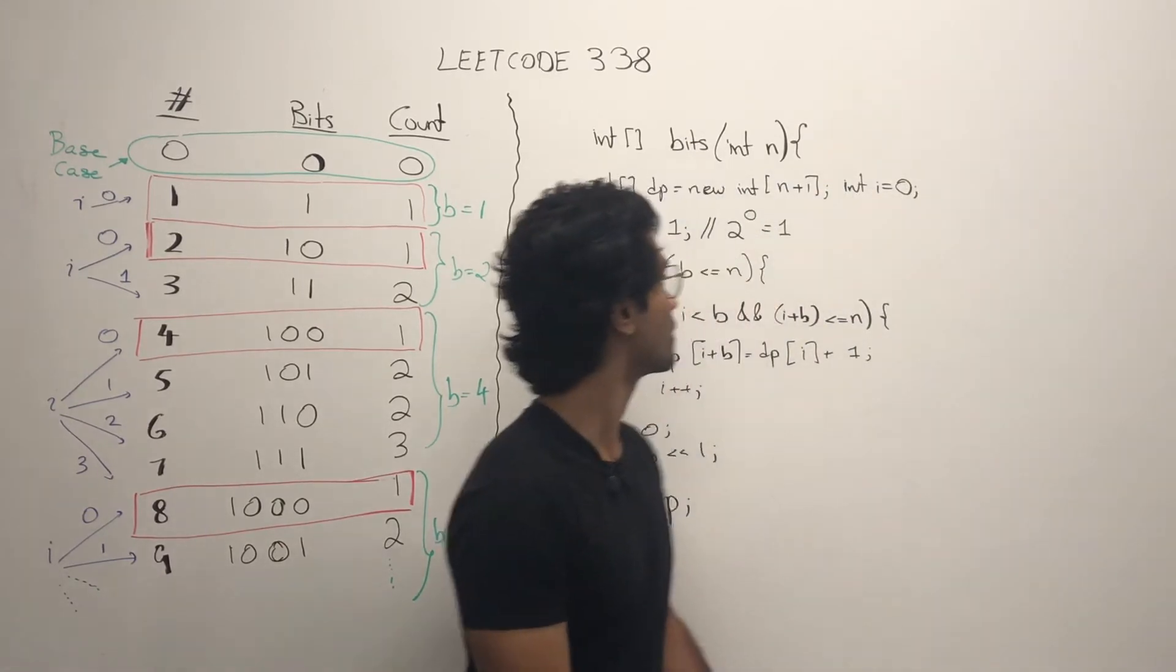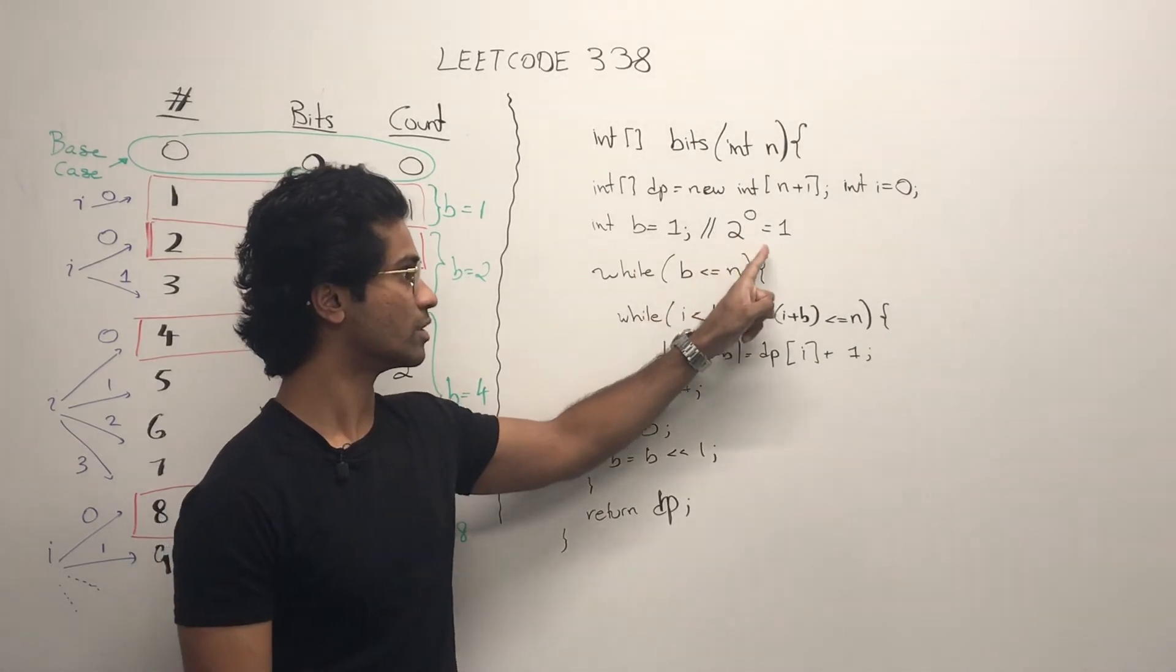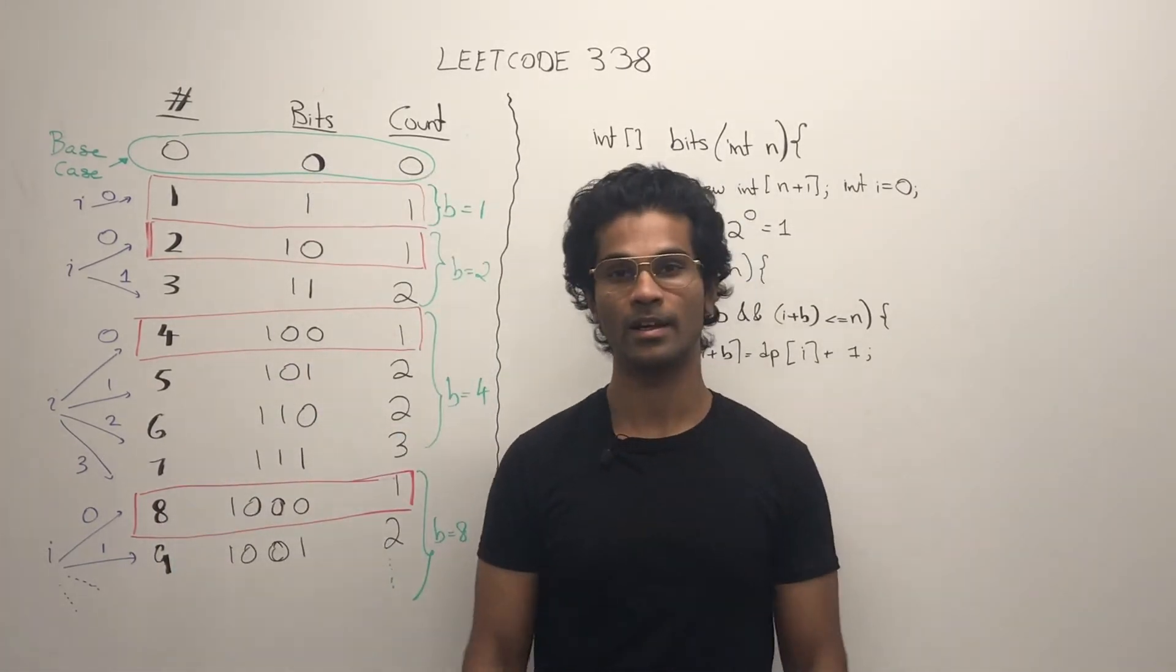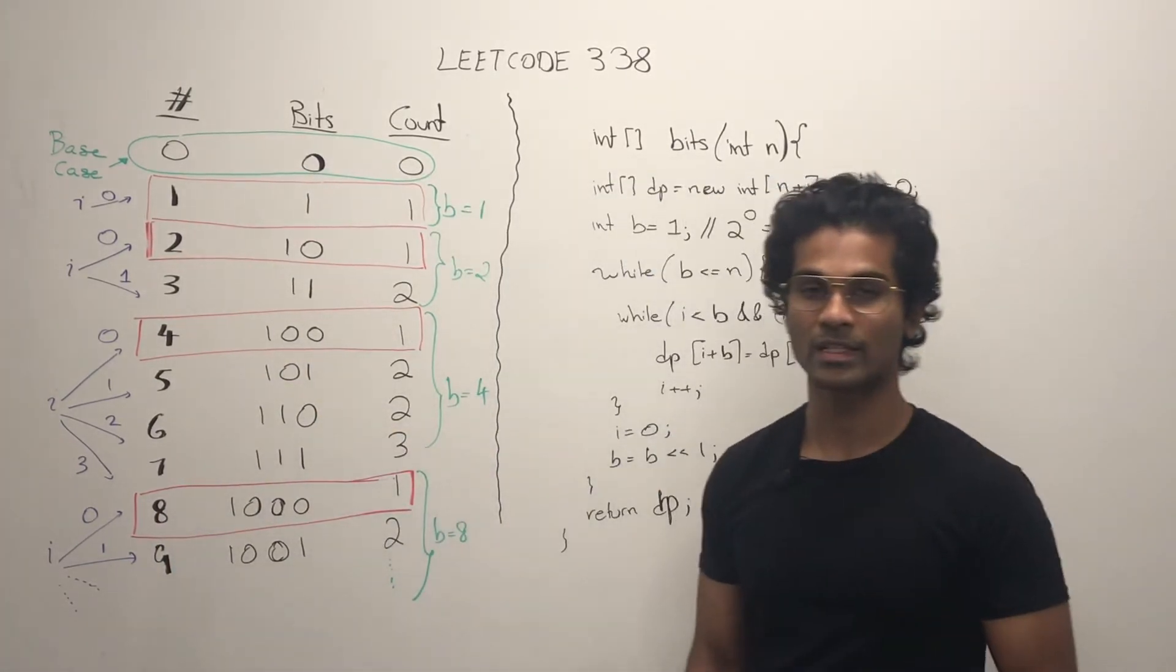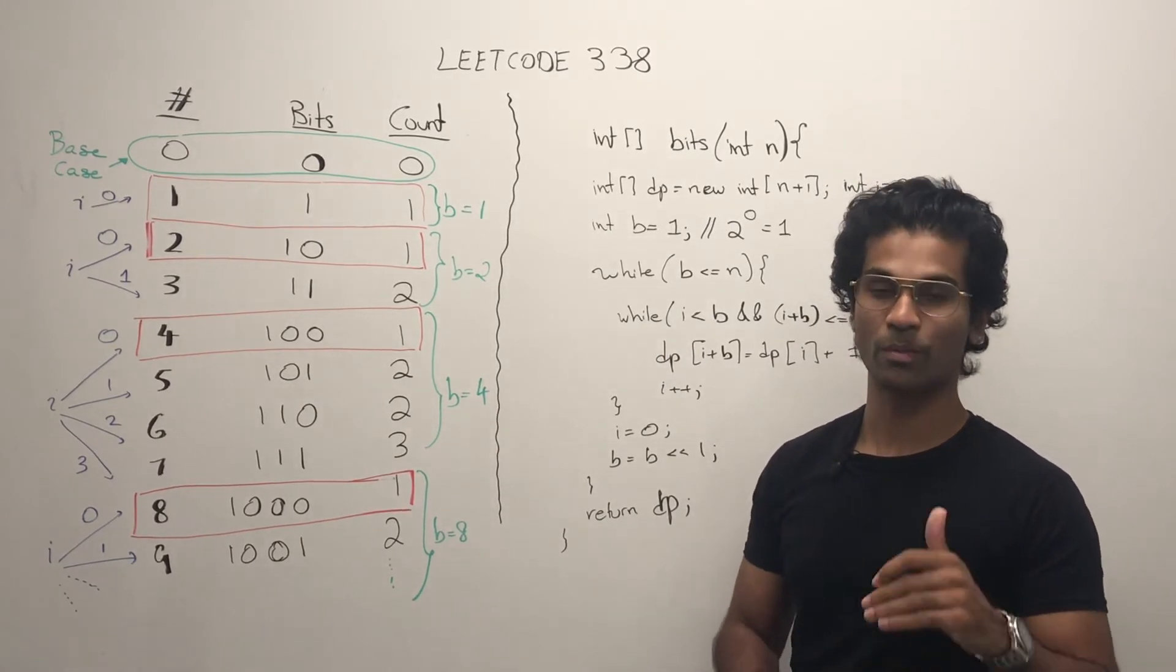That's how we initialize this B right here. B is equal to 1 because it's 2 power 0. Next, we also have this i pointer that's going to go from 0 to B minus 1.